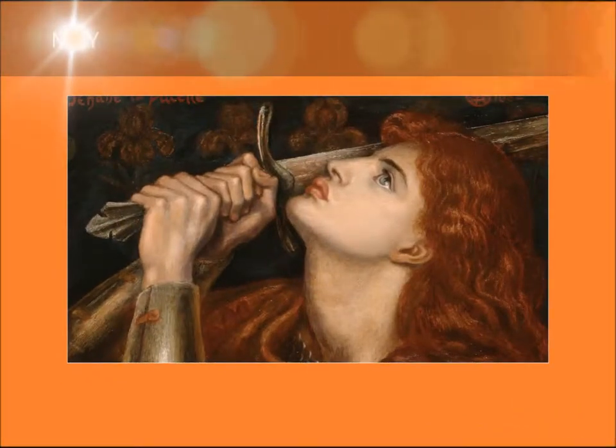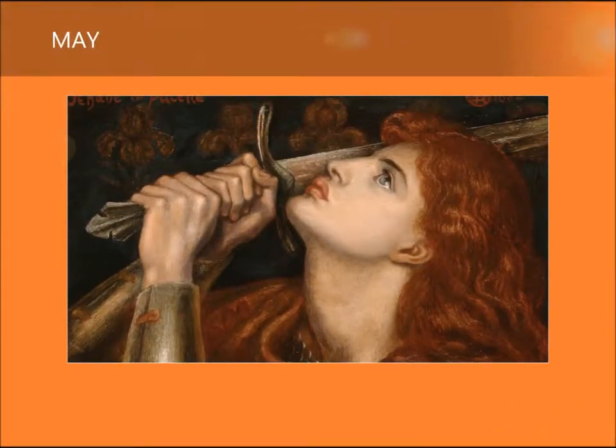May: Joan of Arc. Oil on Panel, 1882, by Dante Gabriel Rossetti. The English artist Dante Gabriel Rossetti painted this work in the final days of his life. Rossetti captures Joan of Arc, the subject of this visually sumptuous painting, in a moment of introspection.